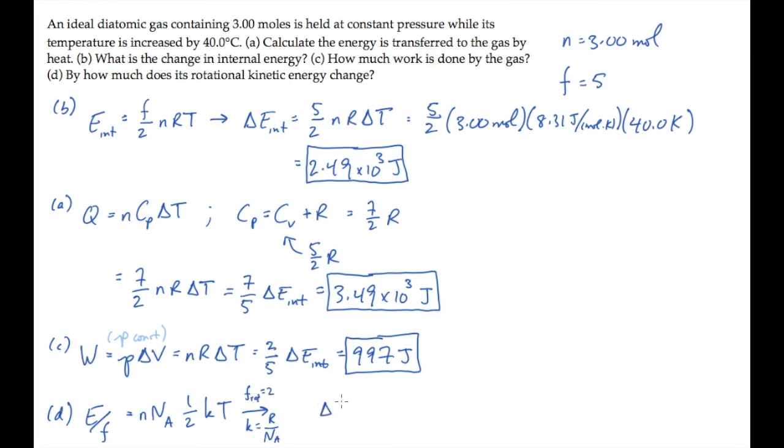then the change in rotational energy is the degrees of freedom divided by 2 times nR delta T. Substitute in the value of 2 to see that this is the same expression that we found in part C. It's nR delta T. So it equals the same value, 997 joules.